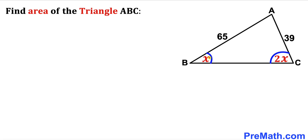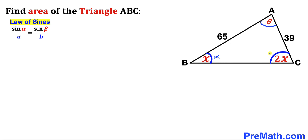Here's our very first step: we must find the value of angle x. Let's assume angle BAC is angle theta. Recalling the law of sines, sine of alpha divided by a equals sine of beta divided by b. With alpha as angle x and beta as 2x, and the corresponding sides 39 and 65, we get: sine of x divided by 39 equals sine of 2x divided by 65.